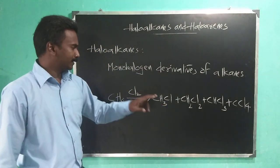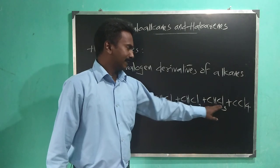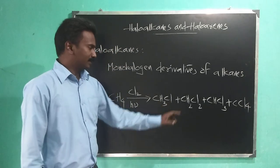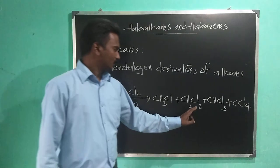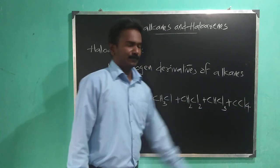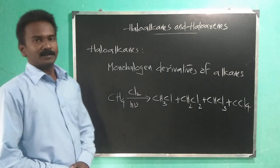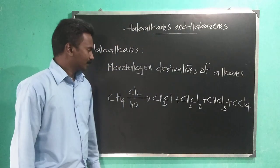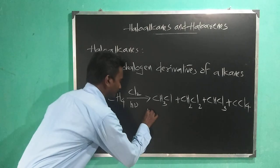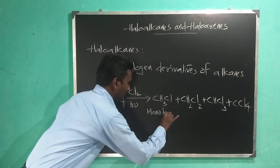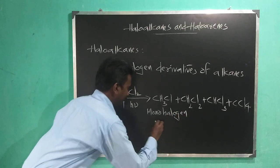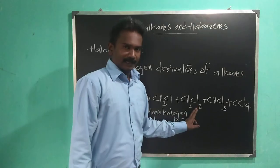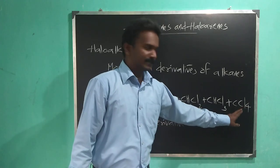So we get monochloromethane, dichloromethane, trichloromethane, and tetrachloromethane. You can see here the number of halogen atoms are different: one halogen atom, two, three, and four. One hydrogen atom is replaced by one chlorine atom, so this compound is a monohalogen derivative. The others are dihalogen, trihalogen, and tetrahalogen derivatives.